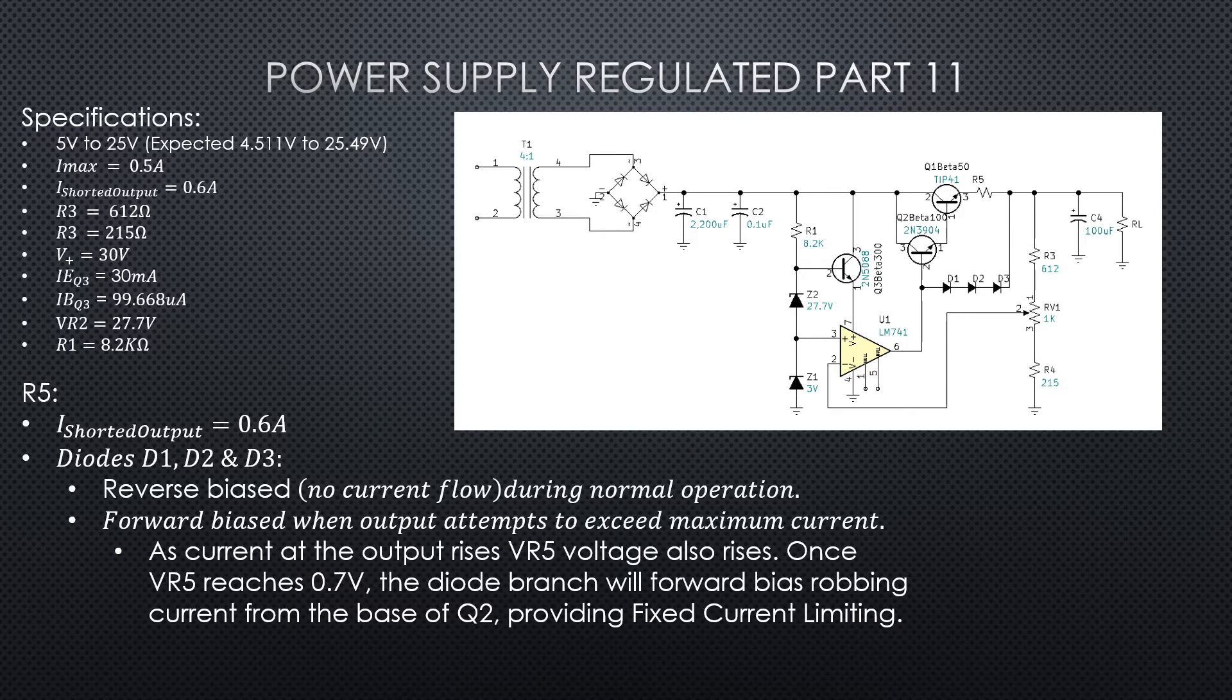All right, so now that we've got a shorted output current that we want to limit at, we need to take a look and decide how does this circuit work. We've got D1, D2, and D3. What you need to realize is normally there's no current flowing through those diodes. They're normally reverse biased, they're not on, there's not enough voltage to bias them on. So that would be your normal operation. Anything that's going to be below our 0.6 amps, we want that branch of diodes to be off.